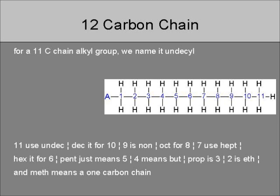For an eleven carbon chain, we name it undecanal. Eleven uses undec, dec is for ten. Nine is non, oct is for eight. Seven uses hept, hex is for six. Pent just means five. Four means but, prop is three, two is eth, and meth means a one carbon chain.